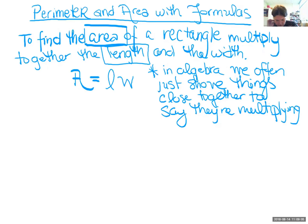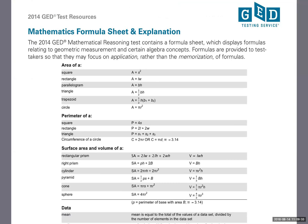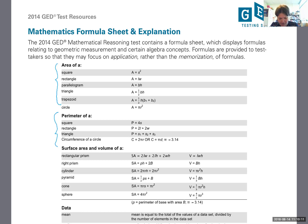Let me show you the formula sheet real quick. I got this one just by googling 'GED formula sheet.' Notice the very first section at the top contains all our area formulas, and the next section has perimeter formulas — so the first third of the sheet is area and perimeter formulas for all the different shapes. We'll be looking at those today. I will not touch on circles — we'll do circles all by itself next class.